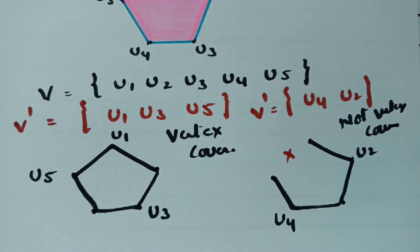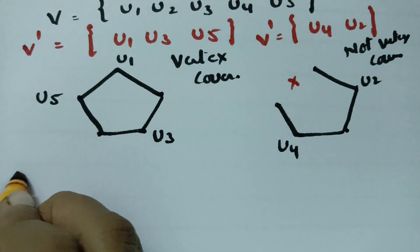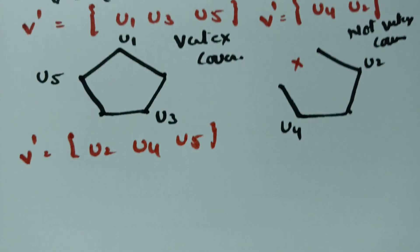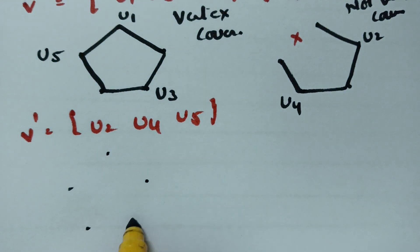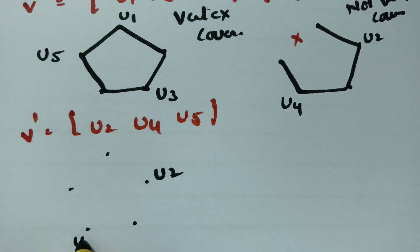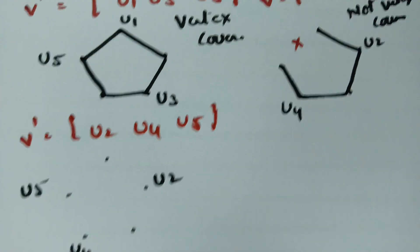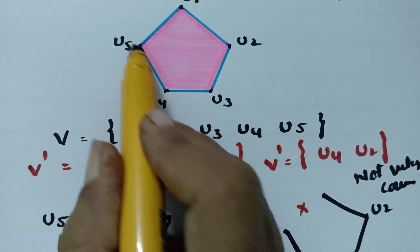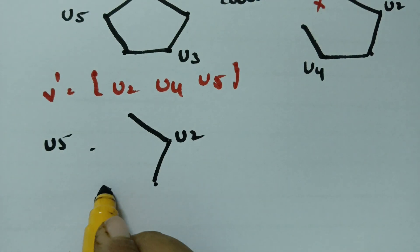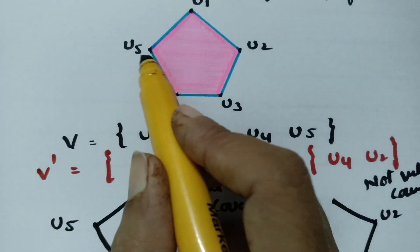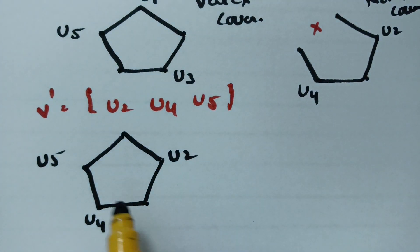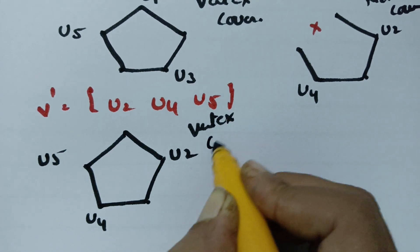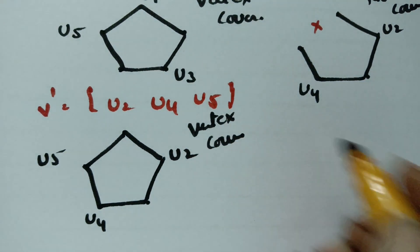Next, consider V' = {U2, U4, U5}. U2 has 2 edges, U4 has 2 edges, and U5 has 2 edges. With these 3 vertices, all the edges are covered. Therefore this set is a vertex cover.